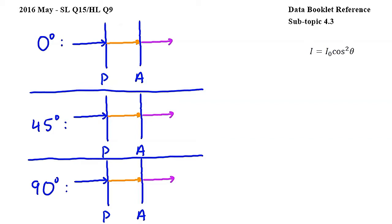In this question, horizontally polarized light enters two polarizers, P and A, and we have to decide how the intensity of light transmitted through A varies with theta, where theta is the angle that polarizer P makes with the horizontal.